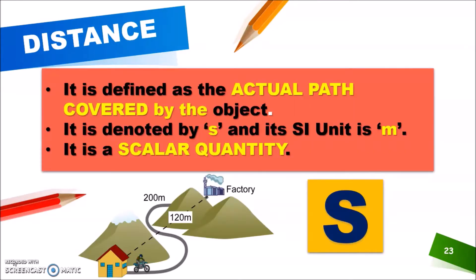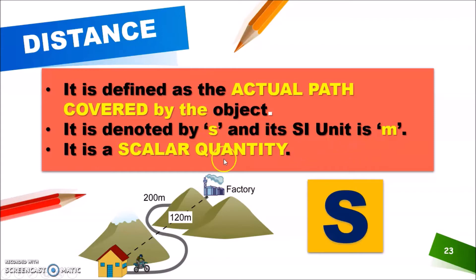So first is distance. It is defined as the actual path covered by the object. So if this bike rider goes like this, the total path length of this road will be 200 meters according to this figure. So this actual path covered by the object will be our distance, and it is denoted by S and its SI unit is meters. And it is a scalar quantity — it does not have any direction.